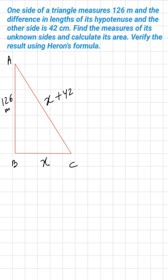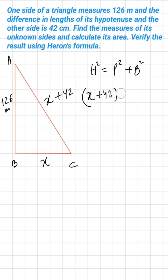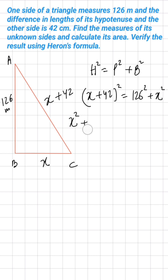We are going to use the Pythagorean theorem to find these unknown sides. The Pythagorean theorem says hypotenuse squared equals perpendicular squared plus base squared. Hypotenuse is x plus 42, so we write: (x + 42)² = 126² + x². Expanding the left side: x² + 42² + 2 × x × 42 equals 126² + x².